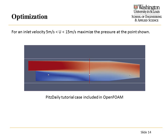For the second problem, I wanted to do an optimization case. It's a little different from coefficient calibration where you know what you're designing to. I picked one of the tutorial files that comes with OpenFOAM — there's a velocity inlet that creates a separation region. I decided to pick a point and maximize pressure at that point, bounding the velocity at the inlet from 5 to 15 meters per second.